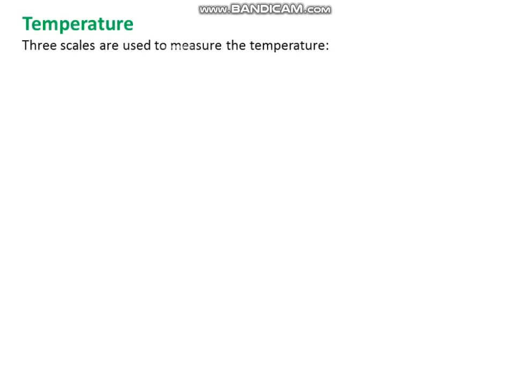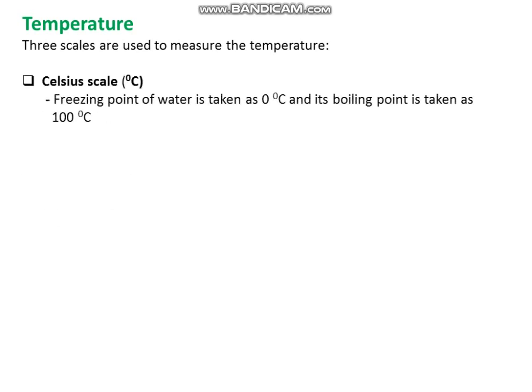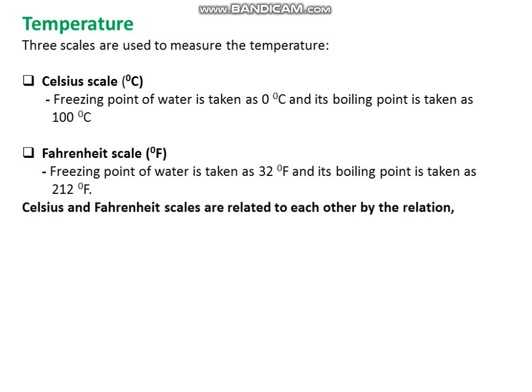Temperature: three scales are used to measure temperature. Celsius scale: the freezing point of water is taken as 0 degree Celsius and its boiling point is taken as 100 degree Celsius. Fahrenheit scale: the freezing point of water is taken as 32 degree Fahrenheit and its boiling point is taken as 212 degree Fahrenheit. Celsius and Fahrenheit scales are related to each other by the relation: